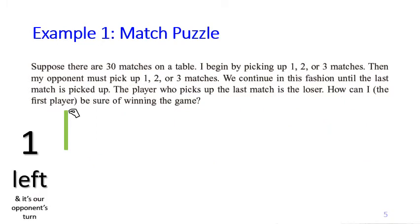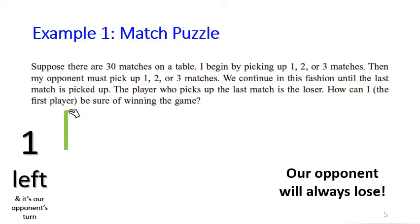At the beginning of the game there are 30 matches on the table, and it's difficult to imagine all the turns that lead to the final outcome. So let's think about a much simpler situation. Suppose there is only one match left on the table and it's our opponent's turn. Our opponent has no choice but to pick up that last match. In this case, our opponent will always lose.